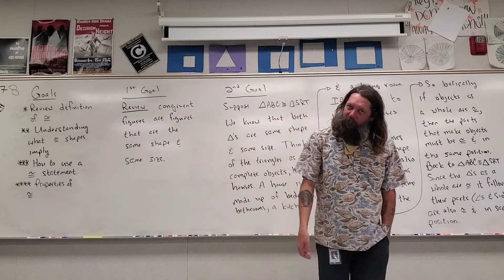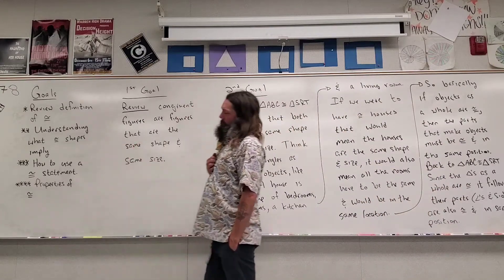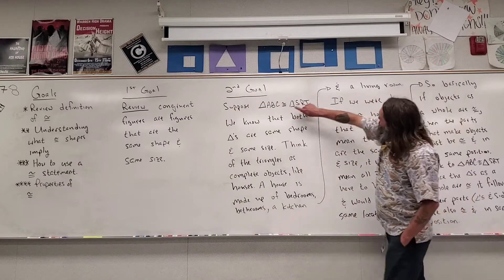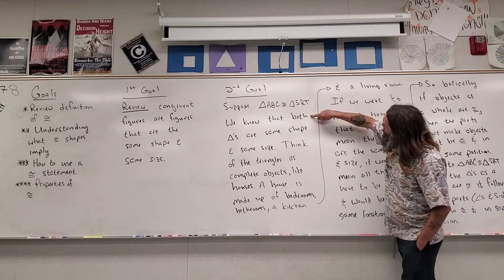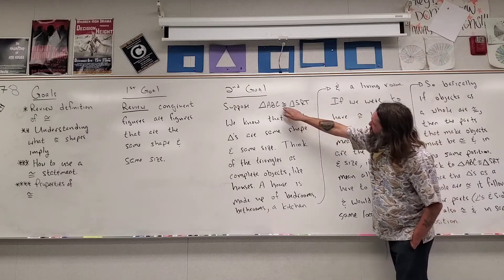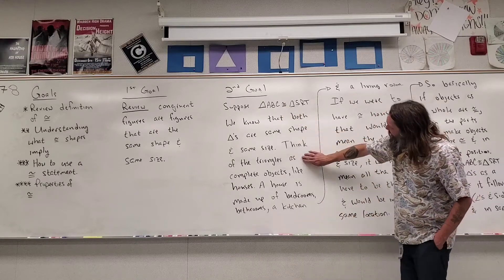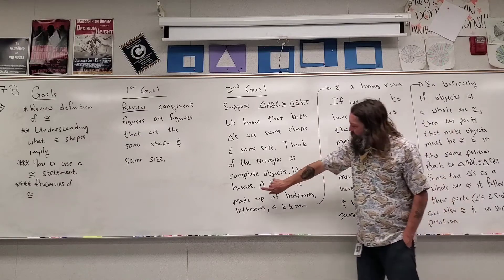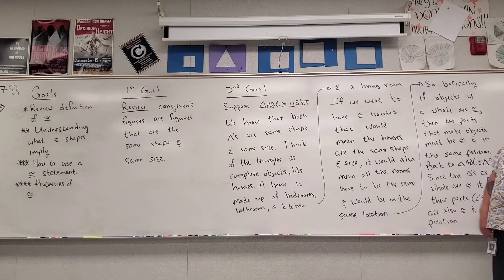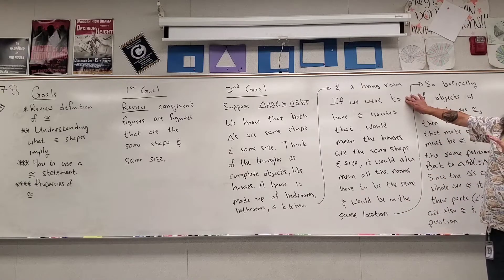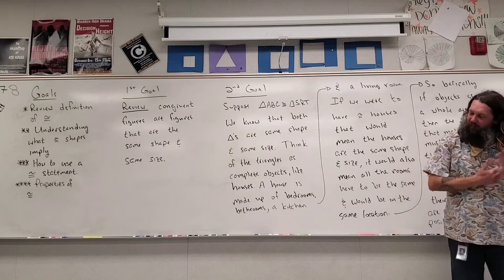That's what it means to be congruent. Now let's jump into our second goal — understanding what congruent shapes imply. Suppose that triangle ABC is congruent to triangle SRT. We know that both triangles are the same shape and the same size. I need you to think of triangles as complete objects, like a house — a house that's made up of bedrooms, bathrooms, a kitchen, and a living room.